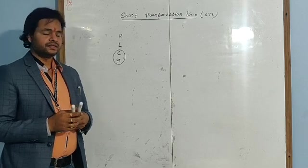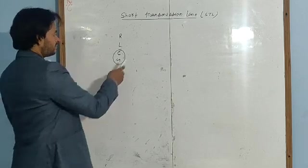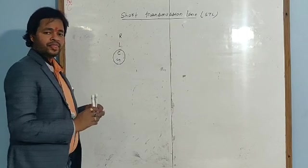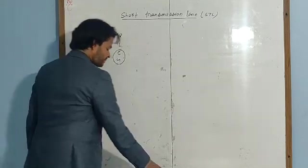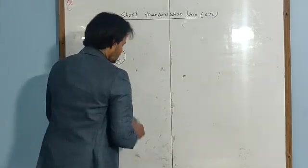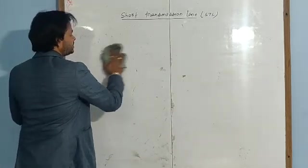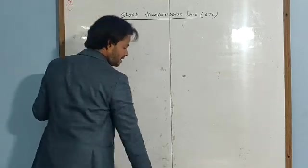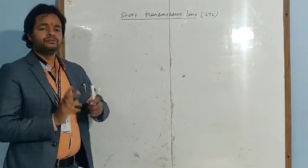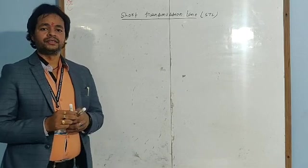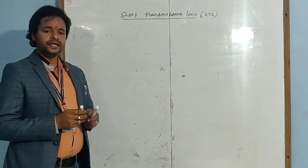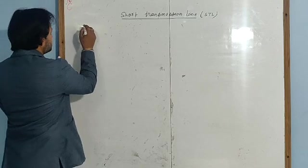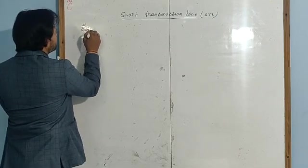Actually there are four transmission line parameters, but in the case of the short transmission line we consider only two parameters: series resistance and series inductance. First of all, the equivalent circuit.